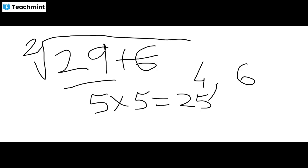Next step is you have to multiply five with the next number of five, that is six, equal to thirty, which is greater than twenty-nine. Yes, okay.